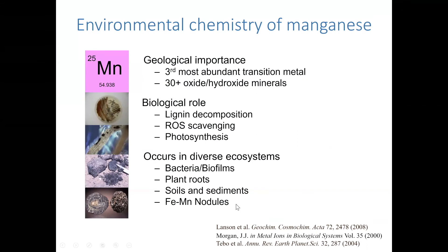Manganese is an environmentally critical element and has a fascinating chemistry. It occurs in three different oxidation states in the environment: manganese 2+, 3+, and 4+, with manganese 3+ being unstable unless complexed by strong ligands, and otherwise forming solids together with manganese 4+. Manganese is the third most abundant transition metal and forms more than 30 different oxide hydroxide minerals.